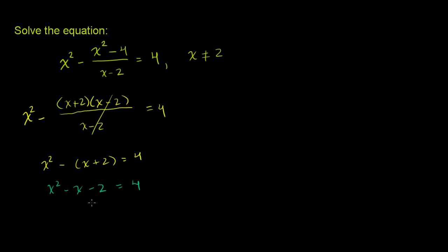That allows us to either factor it or apply the quadratic equation or complete the square or any of the ways that we know how to solve quadratics. Let's get a 0 on the right-hand side. The best way to do that is to subtract 4 from both sides of this equation.